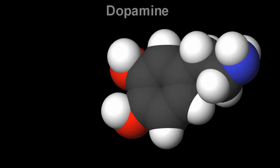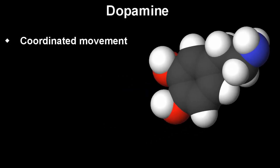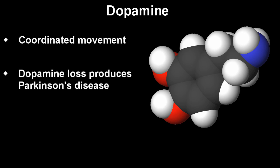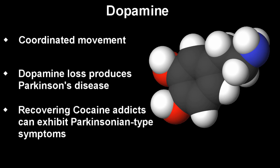Dopamine is also the key transmitter in coordinated movement and the loss of dopaminergic cells in the brain gives the characteristic clinical symptoms associated with Parkinson's disease. This also explains why people recovering from cocaine abuse can experience Parkinsonian type symptoms.